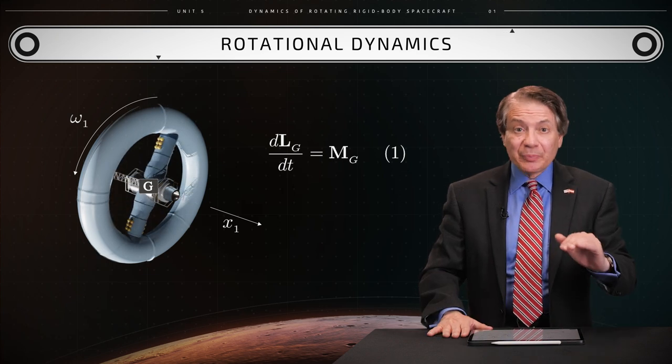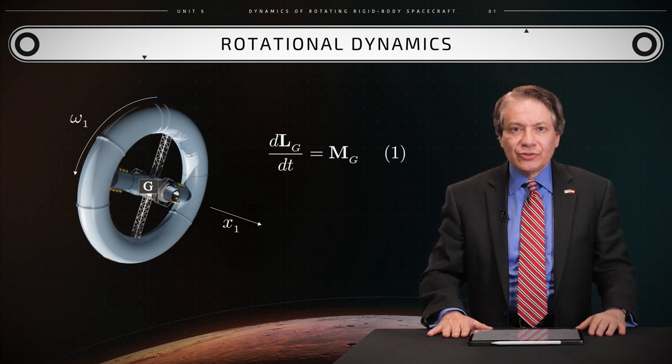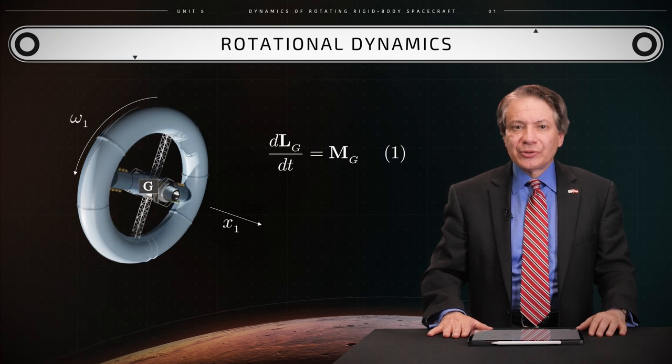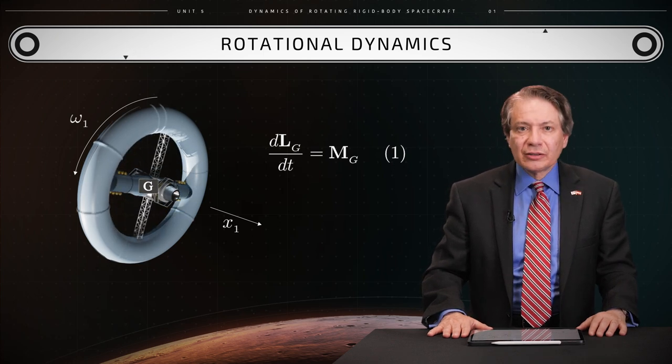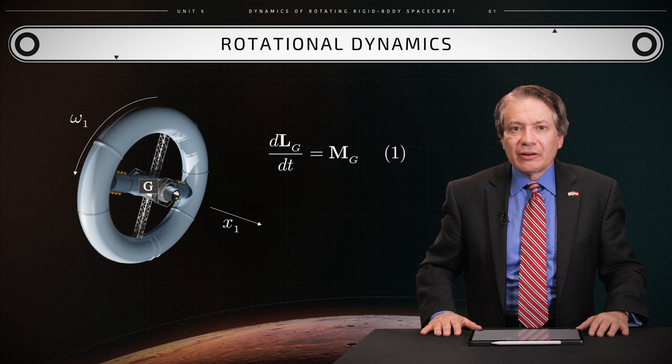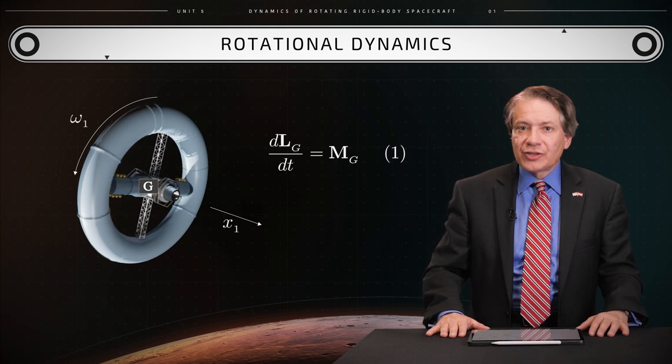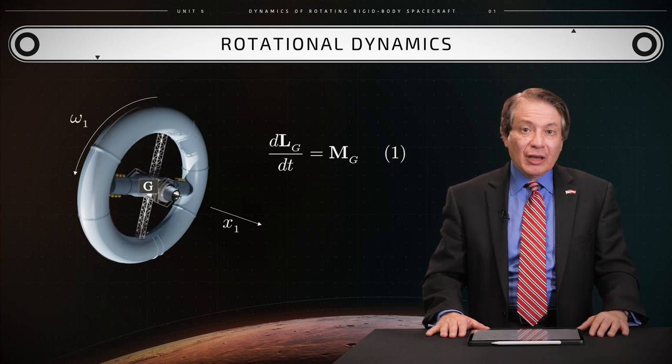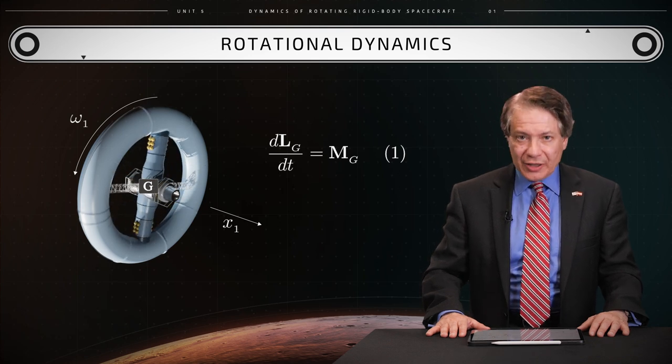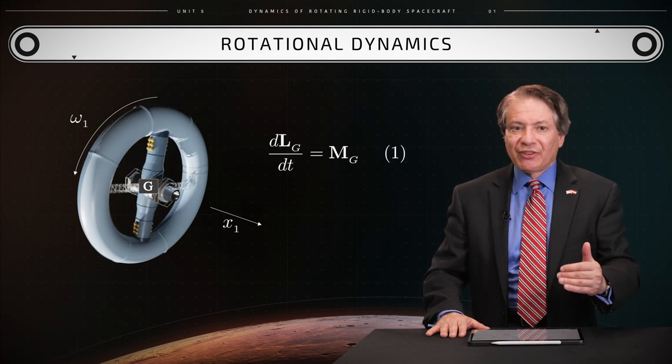An additional source of external moments are maneuvering jet thrusters which are mounted on the spacecraft. From the previous equation, the time rate of change of the total angular momentum vector capital LG eventually generates the equations of rotational dynamics. These equations are named the Euler equations and are expressed as follows.